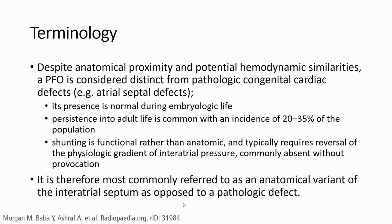Despite being an anatomical variant with proximity and potential hemodynamic significance, the PFO is considered distinct from pathologic congenital cardiac defects, for example, atrial septal defect. It is present as normal during embryological life. Persistent into adult life is common with an incidence of 20 to 35% of the population. Shunting is functional rather than anatomic, and typically requires reversal of the physiologic gradient of inter-atrial pressure, and is commonly absent without provocation.